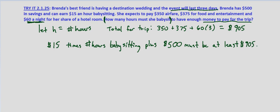So $15 times the number of hours babysitting — we decided that we'd make H the number of hours — so $15H plus the $500 she already has must be at least $905. At least means greater than or equal to; it has to be $905 or greater.